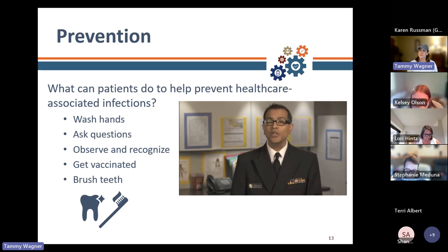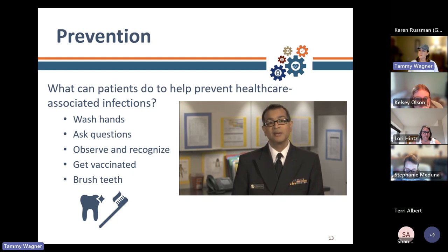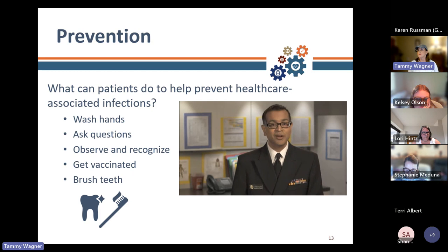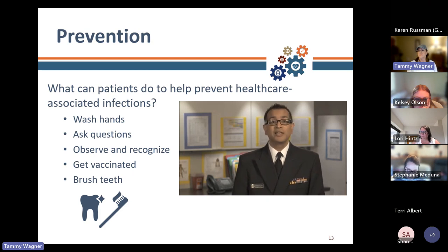Third, take antibiotics only when your provider thinks you need them. If you take antibiotics when you don't need them, you're only exposing yourself to unnecessary side effects. If you do need antibiotics, take them exactly as prescribed. Fourth, get a flu shot every year. The CDC recommends that everyone over the age of six months get a flu shot every year. Getting a flu shot is a simple way to protect not only ourselves but our loved ones as well.